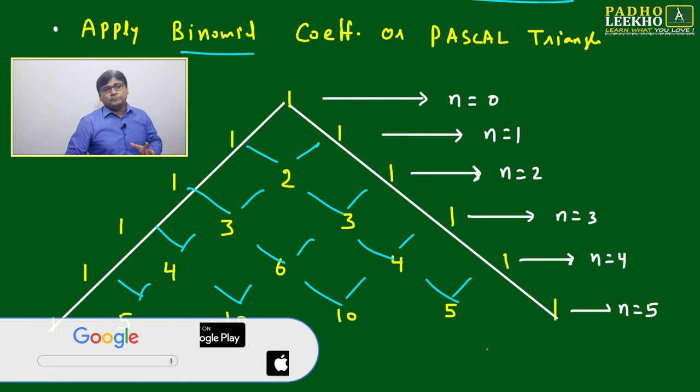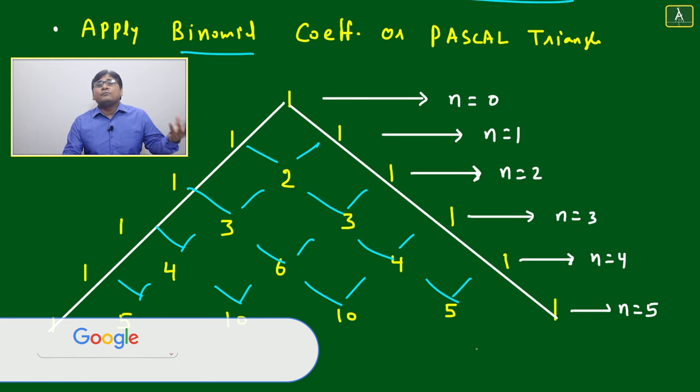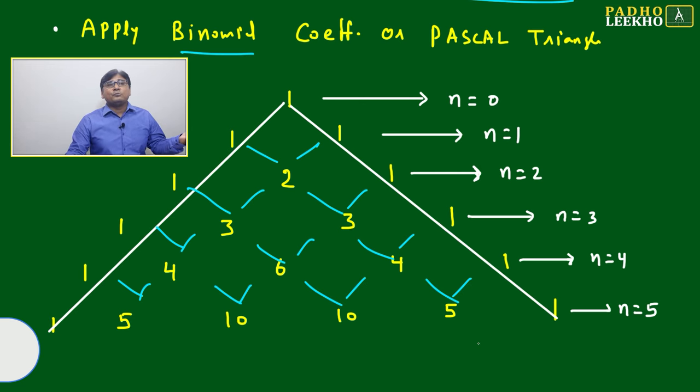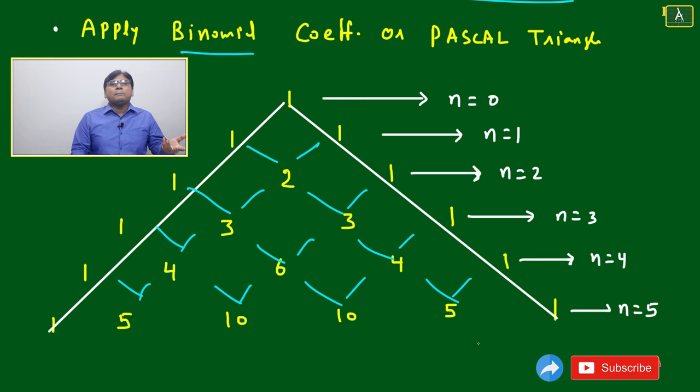Mathematicians didn't have any clue how to find the coefficients for binomial expansion or how to find the number of selections. As permutation, combination, and selection counting kept developing, they struggled with expanding variables in the form of (a+b)^n.